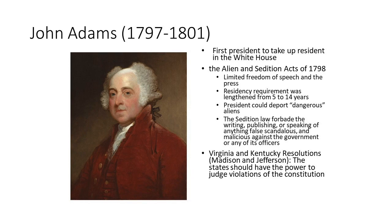Madison and Jefferson think that states should be able to decide if something is unconstitutional, and so they draft the Virginia and Kentucky Resolutions — the Virginia one by Madison, the Kentucky one by Jefferson. They argued states have a right to nullify or not obey something that Congress passes if they think it's unconstitutional. This will eventually be figured out in 1803 with Marbury v. Madison, where the Supreme Court has the power to define what is constitutional or unconstitutional — the power they still have today.